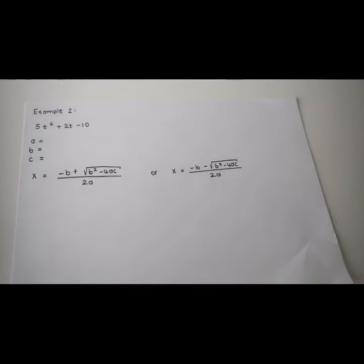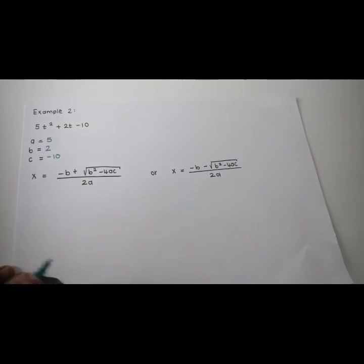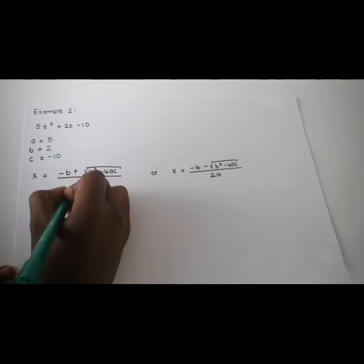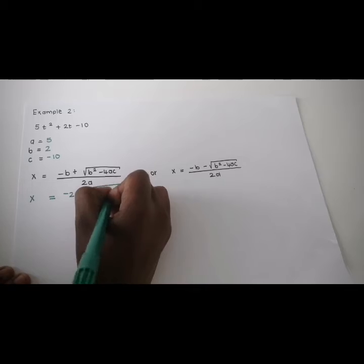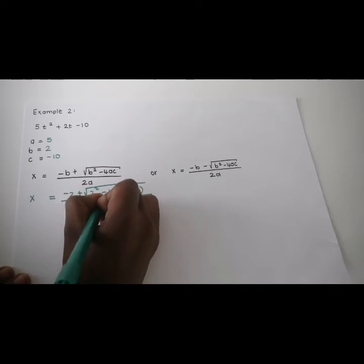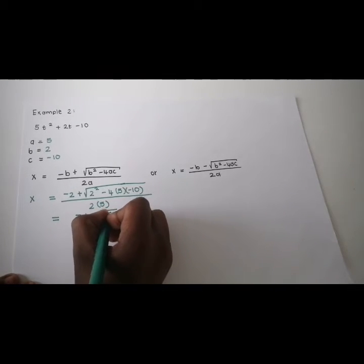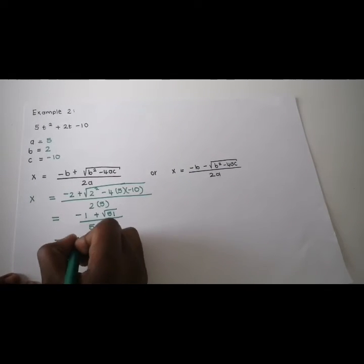Example 2. We identify a, b, and c: a equals 5, b equals 2, c equals negative 10. Then we plug our numbers into the formula: negative b — minus 2 — plus the square root of 2 squared minus 4 times 5 times negative 10, all over 2 times 5. Plug it into your calculator and you should get negative 1 plus root 51 over 5, which you can also express as a decimal.